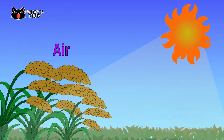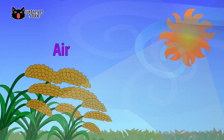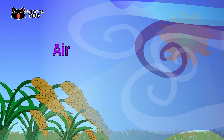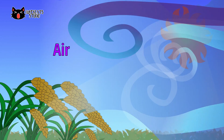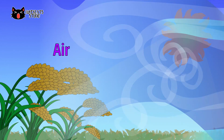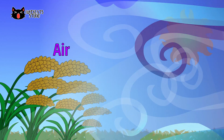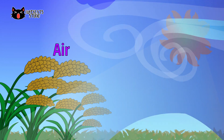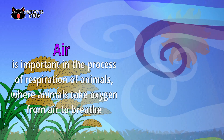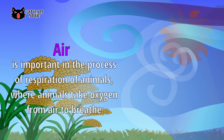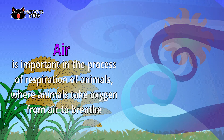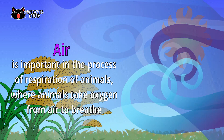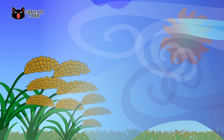Air is an abiotic component that is present everywhere, especially in the atmosphere. Air consists of different gases like oxygen, nitrogen, methane and carbon dioxide. It is important in the process of respiration of animals, where animals take oxygen from air to breathe.